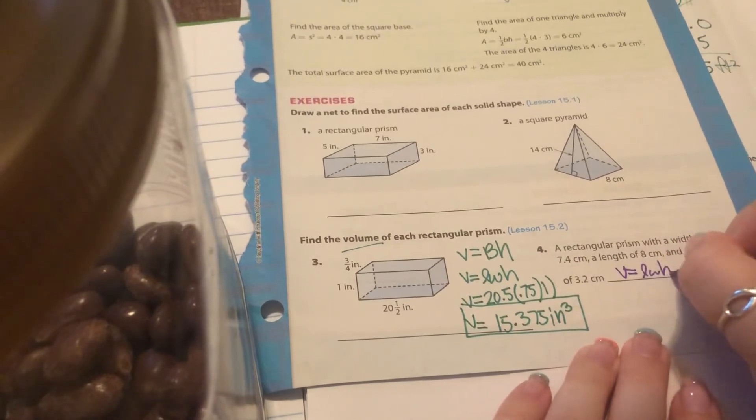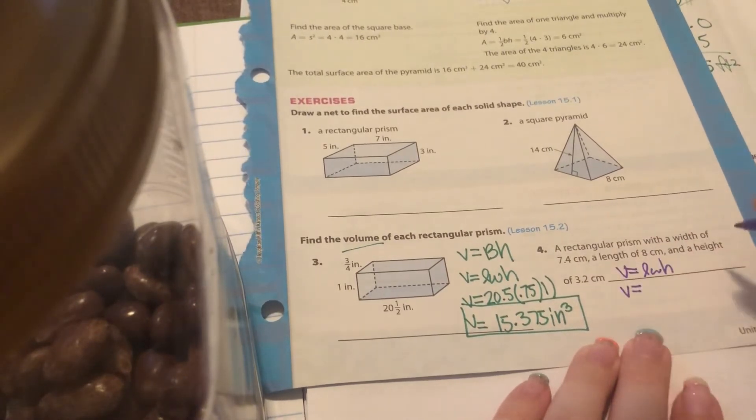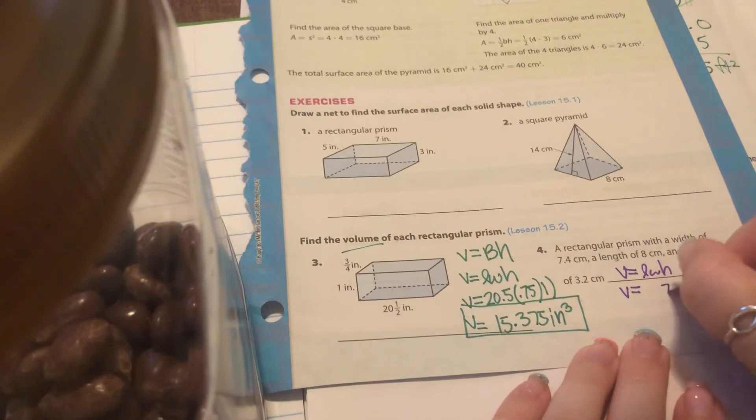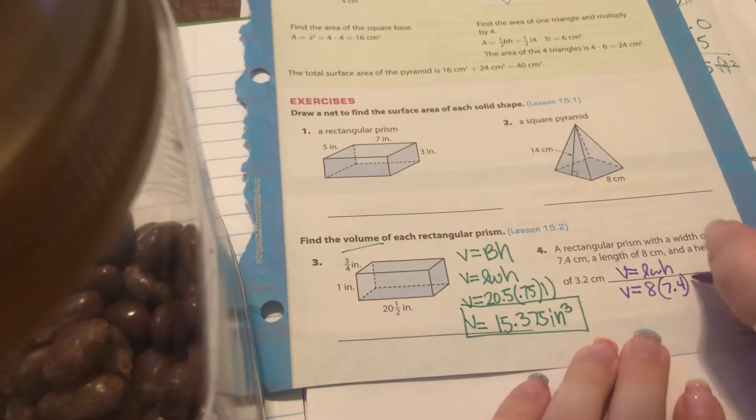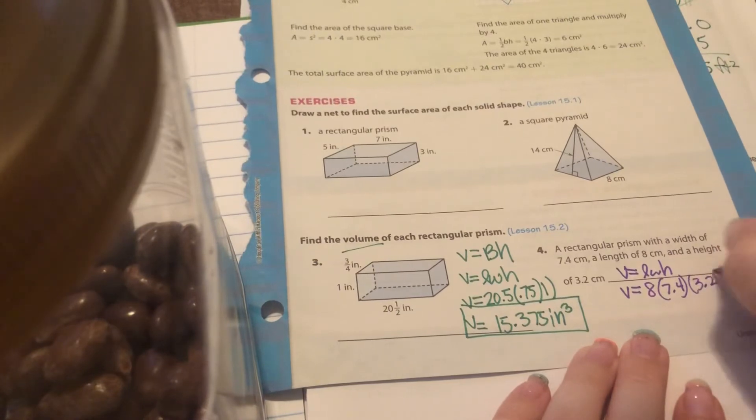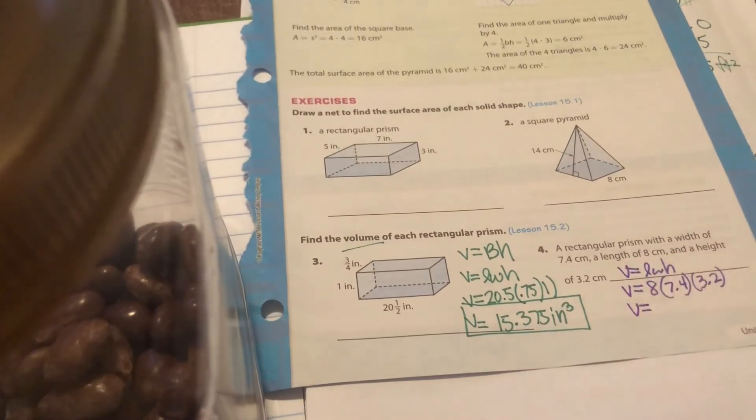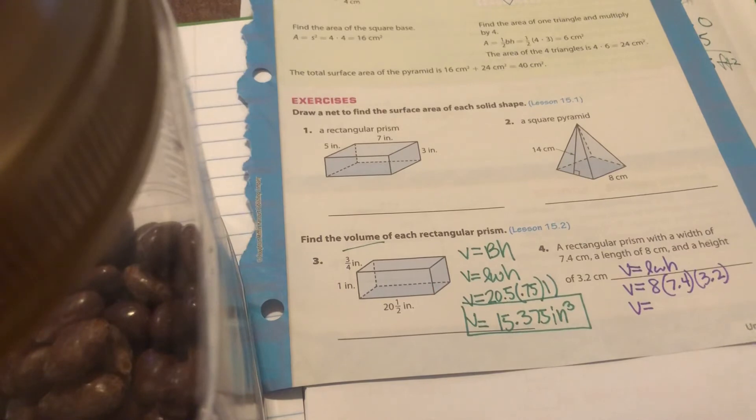They said it has a width of 7.4, a length of 8, and a height of 3.2. So go ahead and type that into your calculator: 8 times 7.4 times 3.2. You should get 189.44.